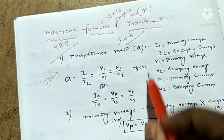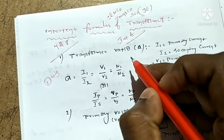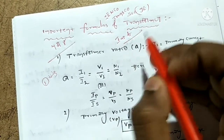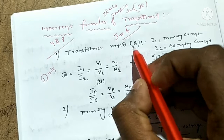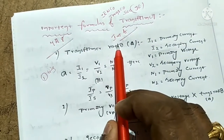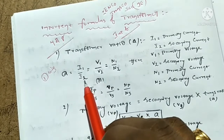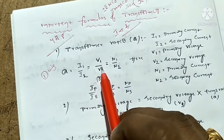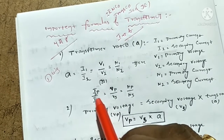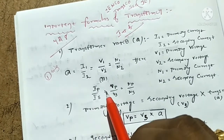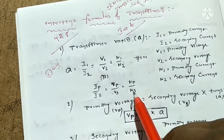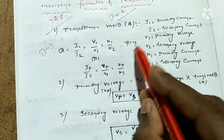Transformer ratio is the question. Please find out the transformer ratio. The transformer ratio is: I1 by I2 equals V1 by V2 equals N1 by N2. That is, primary current by secondary current equals primary voltage by secondary voltage equals primary turns by secondary turns.